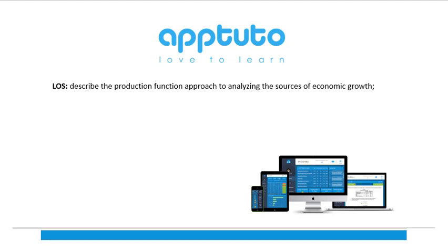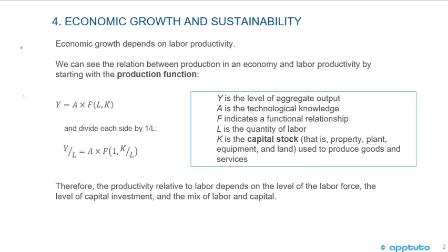This LOS has described the production function approach to analyzing the sources of economic growth. Economic growth and sustainability. Economic growth depends on labor productivity. We can see the relation between production in an economy and labor productivity by starting with the production function.